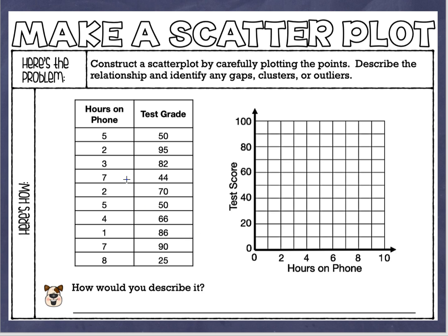Our x values are across the bottom — these are the hours on the phone. Up the side is our y-axis — this is going to be the test score. When we have our table of data, the first column shows the x values and the second column shows the y values. We want to make sure we're looking carefully at how our graph is numbered — we're going by ones on the bottom, so this would be 1, 3, 5, 7, and 9.